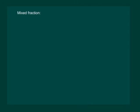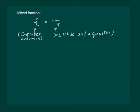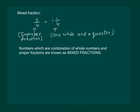Let us recall that the improper fraction, say 5 by 4, can be written as 1 and 1 by 4. This means 1 whole and a quarter. Such a representation of an improper fraction is called a mixed fraction. In other words, numbers which are a combination of a whole number and a proper fraction are known as mixed fractions.